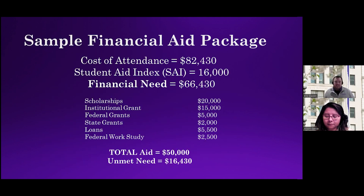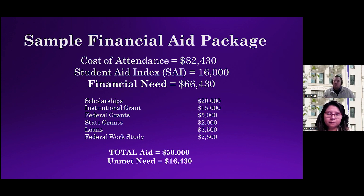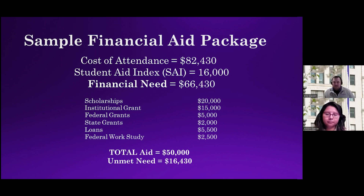This is a sample of what a financial aid package could look like. You should see the overall cost of attendance broken down with direct and indirect costs, the student aid index (from your FAFSA), and your financial need (cost of attendance minus student aid index). From there, it shows your scholarships (any merit scholarships), institutional grants, federal grants, state grants, loans, and federal work-study. In this sample, total aid is $50,000, with unmet need of $16,430. These are all general numbers just to give you a rounded idea. Note that federal work-study does not come off of a billing statement.